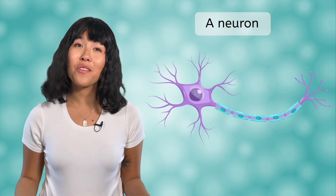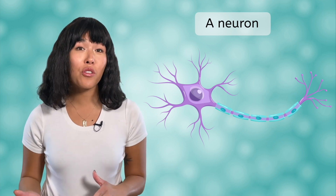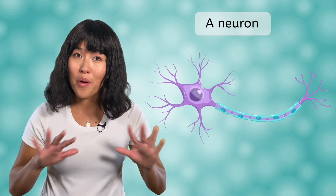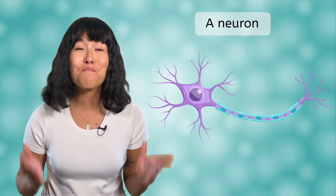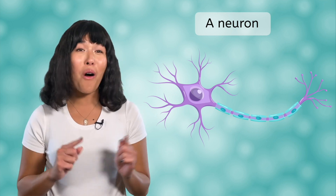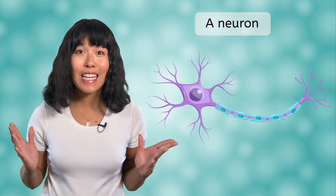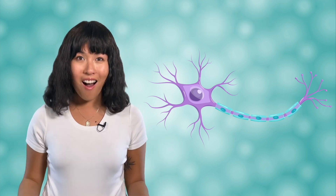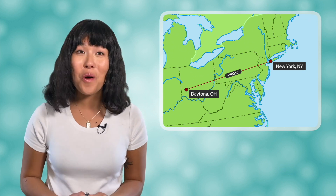The nervous system is a complex network of nerve cells, also called neurons. Neurons are specialized cells that transmit electrical and chemical signals throughout the body. Your body has approximately 100 billion neurons. If you were to line all of the neurons in your body up end-to-end, it would be 600 miles long — the distance from New York City to Dayton, Ohio.